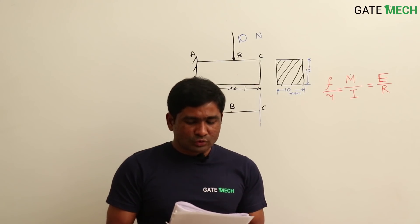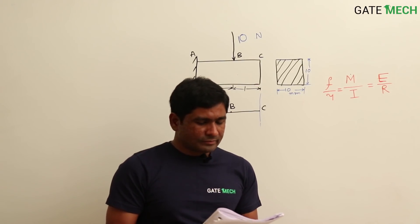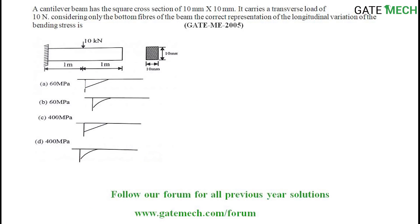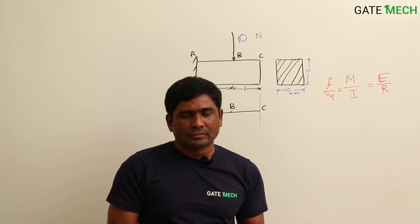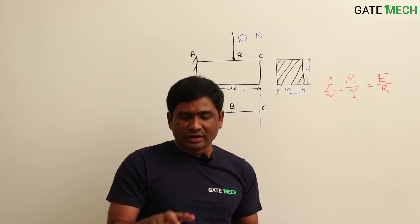This was a 2005 screen question. A cantilever beam has a square cross-section of 10 mm × 10 mm. It carries a transverse load of 10 Newton at the midpoint. Considering only the bottom fibers of the beam, find the correct representation of the longitudinal variation of the bending stress.